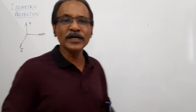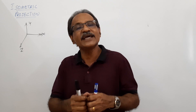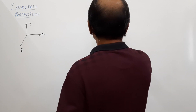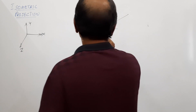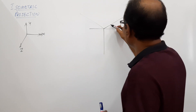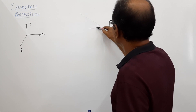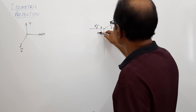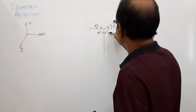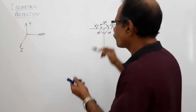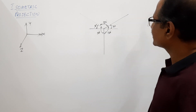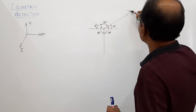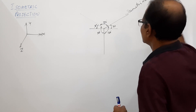In isometric projection, we take three corresponding axes — corresponding to the x, y, z axes, we take three axes in isometry. These three axes are at 120 degrees to each other. Two of them make 30 degrees to the horizontal: one is to the right side at 30 degrees, the other is to the left side at 30 degrees, and the third one is vertical. These three axes are called the isometric axes.